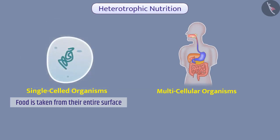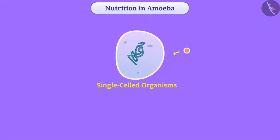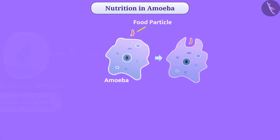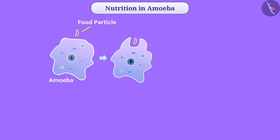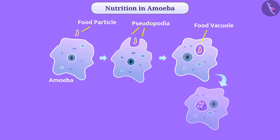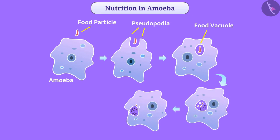Let us understand amoeba's method of consuming food. As in single-celled organisms, food is taken from their entire surface. Amoeba surrounds food particles with temporary finger-like extensions of the cell surface called pseudopodia. All extensions then fuse and form a food vacuole. Inside, this complex food is broken down into simpler substances. The remaining undigested material moves towards the cell surface and is removed from the body.